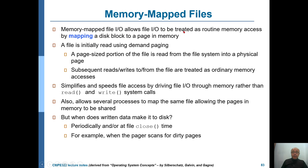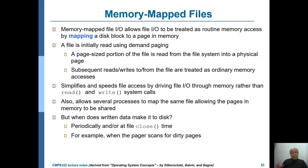Memory-mapped file I/O allows file I/O to be treated as routine memory access, because that data is already in the memory, by mapping the disk block to a page in memory. The file is initially read using demand paging, so it's not immediately brought into memory — that block of the file is brought into memory when there is demand.